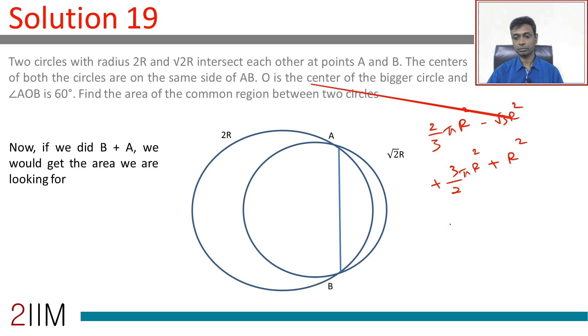plus R square. Let us put the pi's together. 3 by 2 is 9 by 6, 2 by 3 is 4 by 6